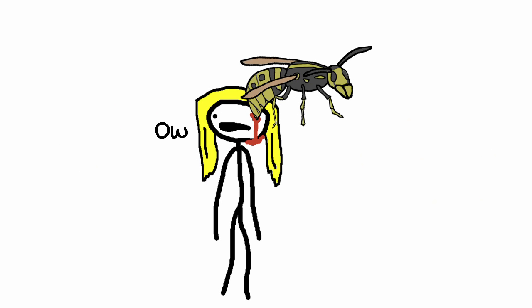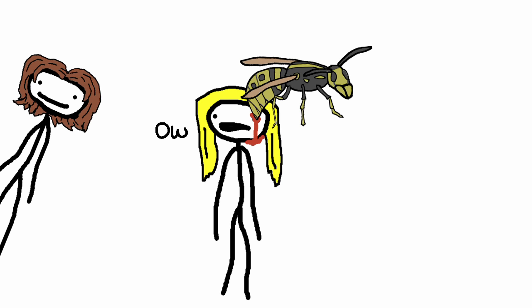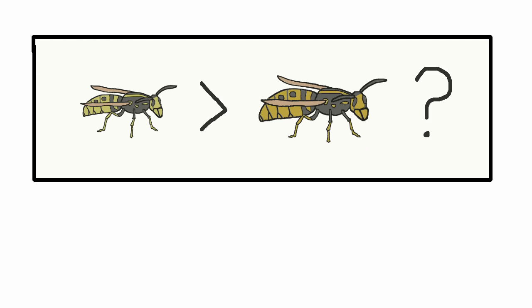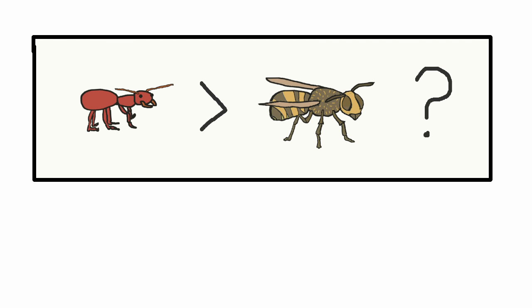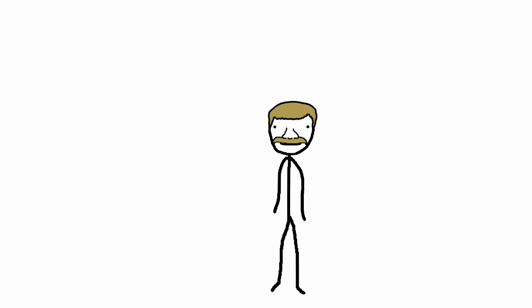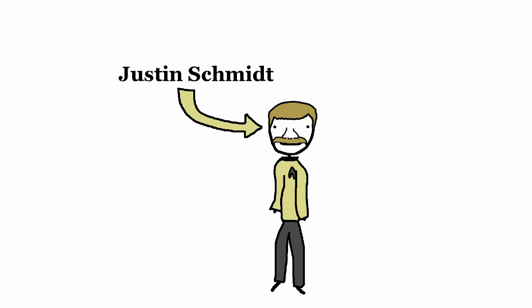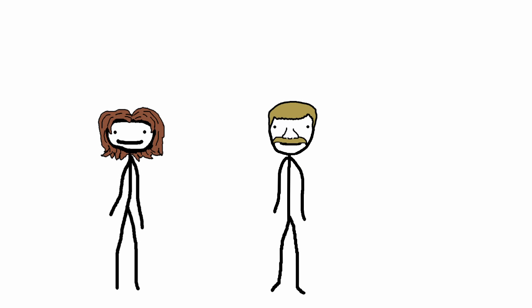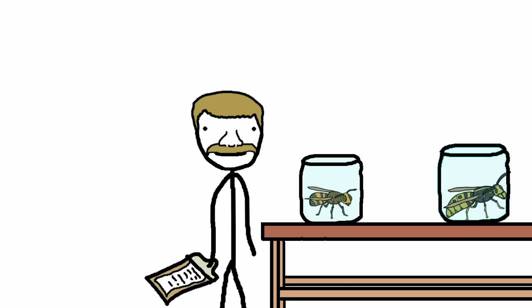First is the Schmidt Pain Index. Now, anybody could tell you that getting stung by a bug tends to hurt, but just how much does one sting hurt compared to another? Are yellow jackets worse than hornets? Are fire ants worse than honeybees? Nobody in the world of science knew for sure. That is, until a young upstart by the name of Justin Schmidt decided to boldly go where no entomologist has gone before. But how did he plan to quantify the level of pain caused by different insect stings? Well, it went something like this.